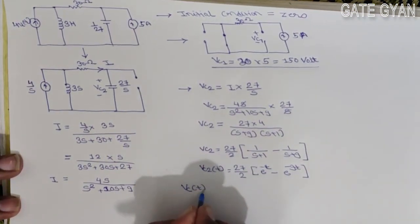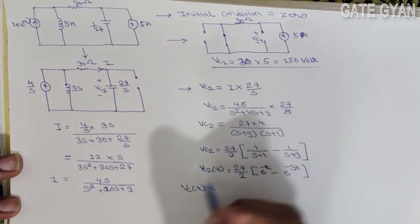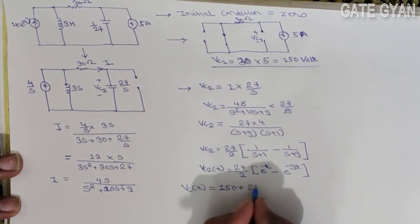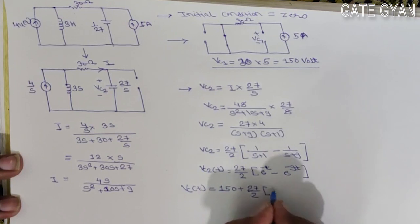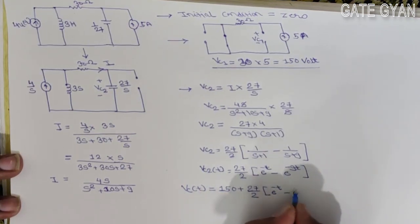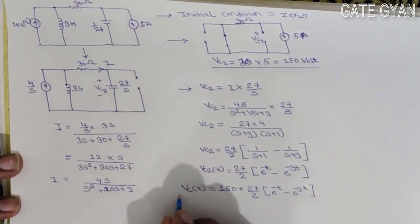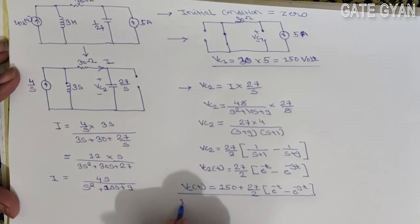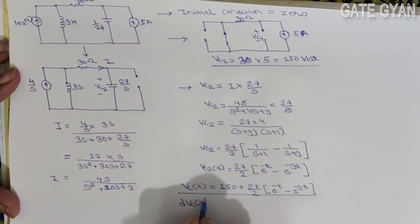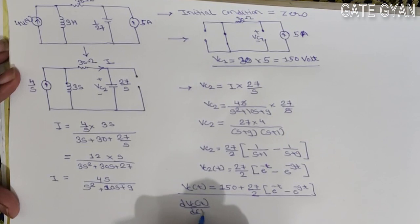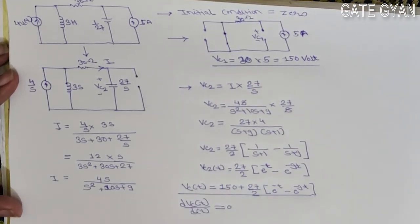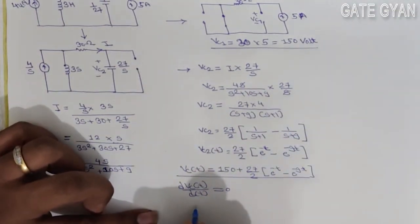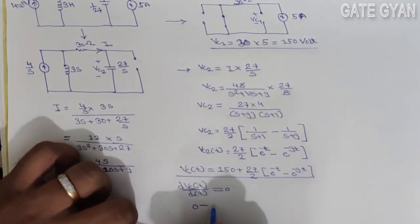The final answer is VC(t) = VC1 + VC2. So VC(t) = 150 + (27/2)(e^(−t) − e^(−9t)). Now to find the maximum VC, I differentiate and set dVC/dt = 0.